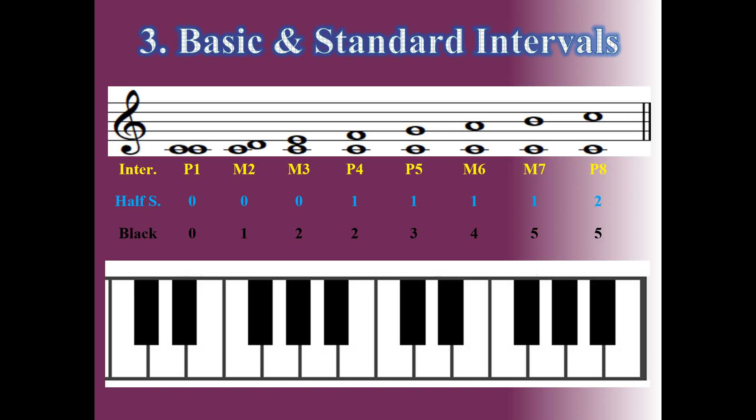The following are basic and standard intervals you should know before studying various intervals. Try to memorize and remember them. From DO to DO: it is the first interval, also called unison. We call it the perfect first interval. When you see this on the keyboard, there is only one key — unison means the same note.